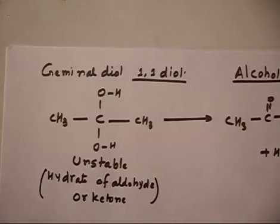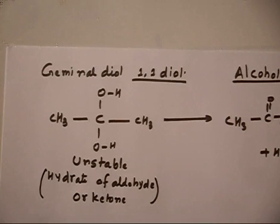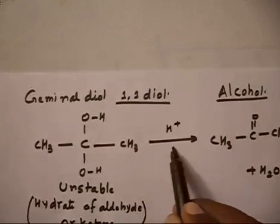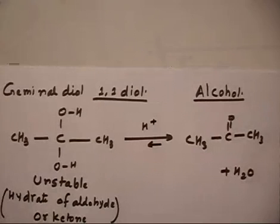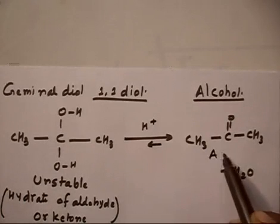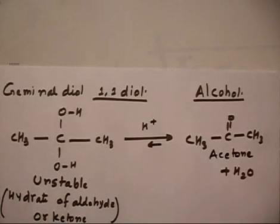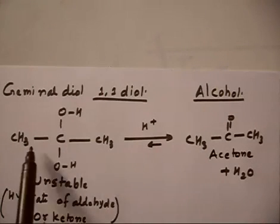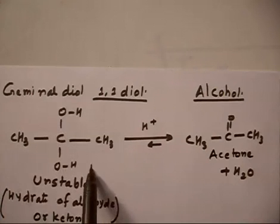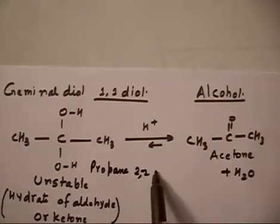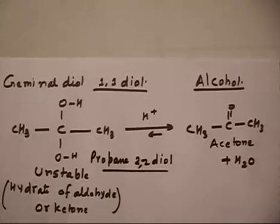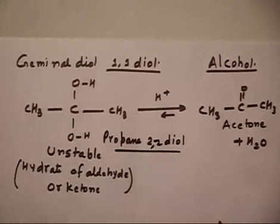The problem asks us to propose the mechanism for the acid-catalyzed loss of water from propane-2,2-diol to give acetone. This reaction is reversible — at equilibrium you have some hydrate form and some acetone form. Propane-2,2-diol has two OH groups at carbon number 2.